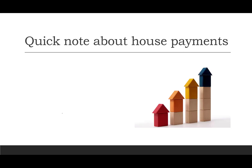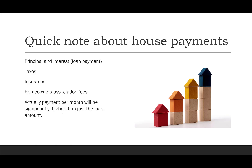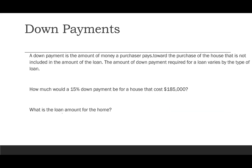A quick note: principal and interest are just the beginning of a house payment. You also have to pay taxes, insurance, and possibly a homeowners association fee. So the actual monthly payment will be significantly higher than just $805 — likely upward of $1,000 once you add taxes and insurance.